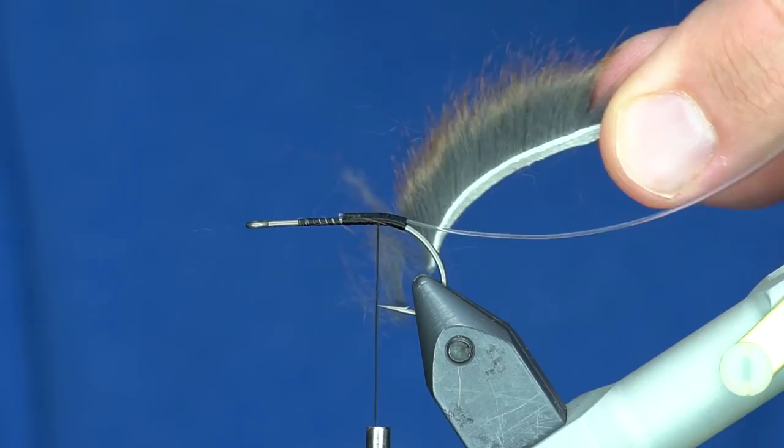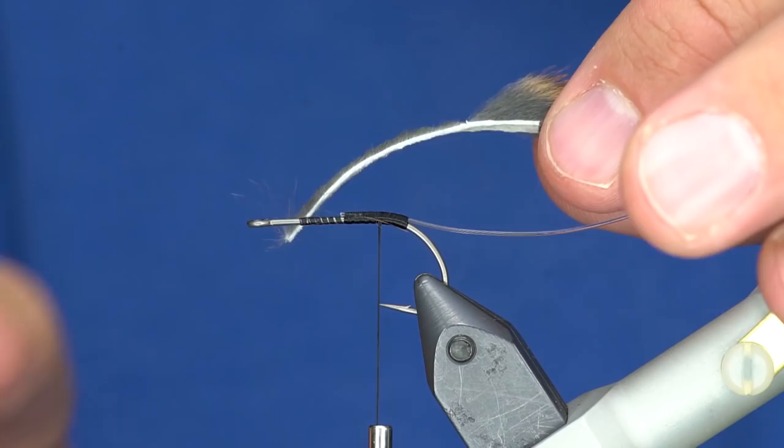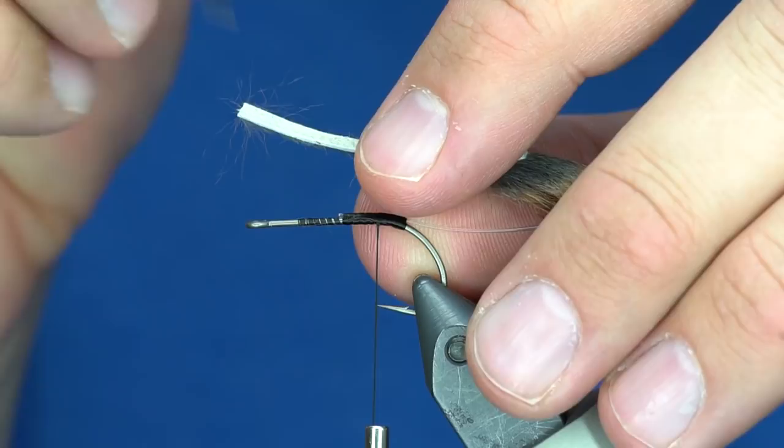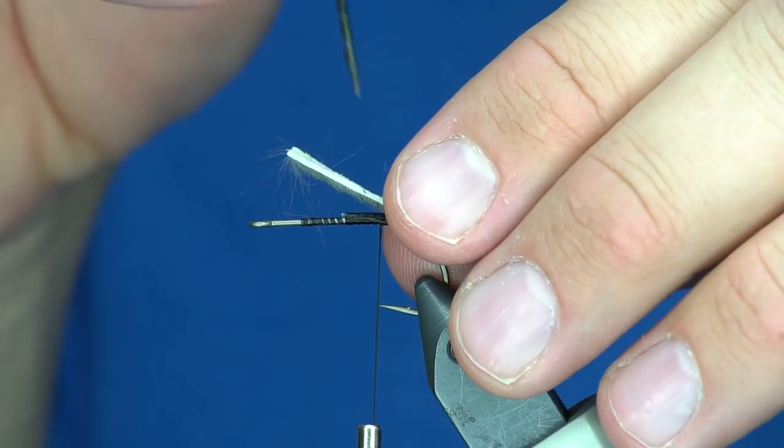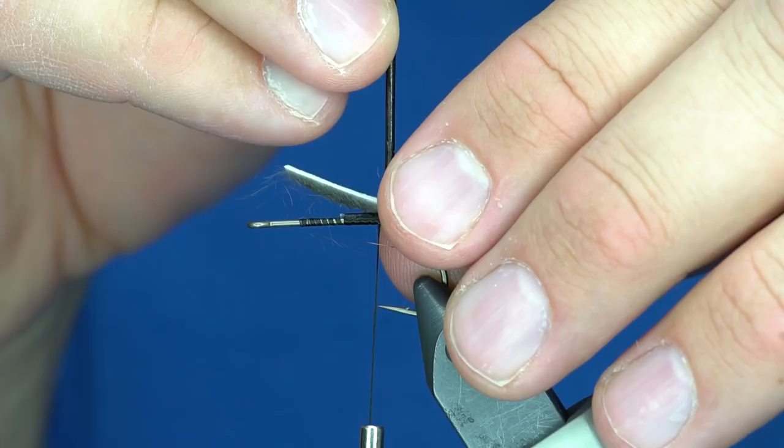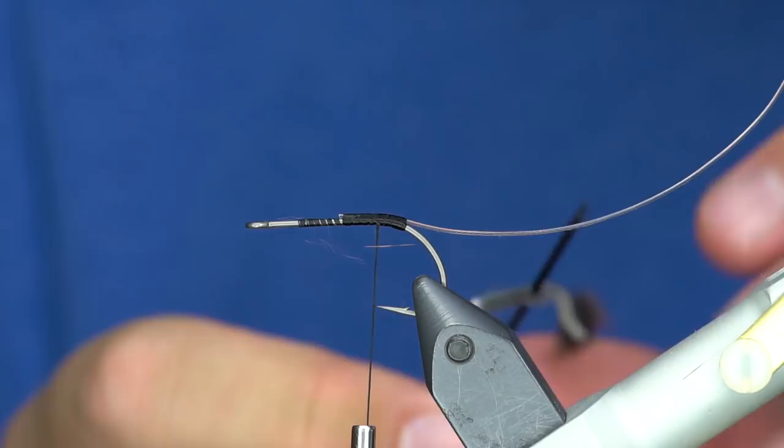Before I tie this in, I'm going to trim off all the hair except for that little tuft, and I'm gonna poke a hole in it. I'm going to poke a hole about halfway up, maybe a little bit closer to where the tie-in point is. The easiest way to do that is just to take your bodkin and put it on the leather on the table and then lift your leather up through the bodkin.